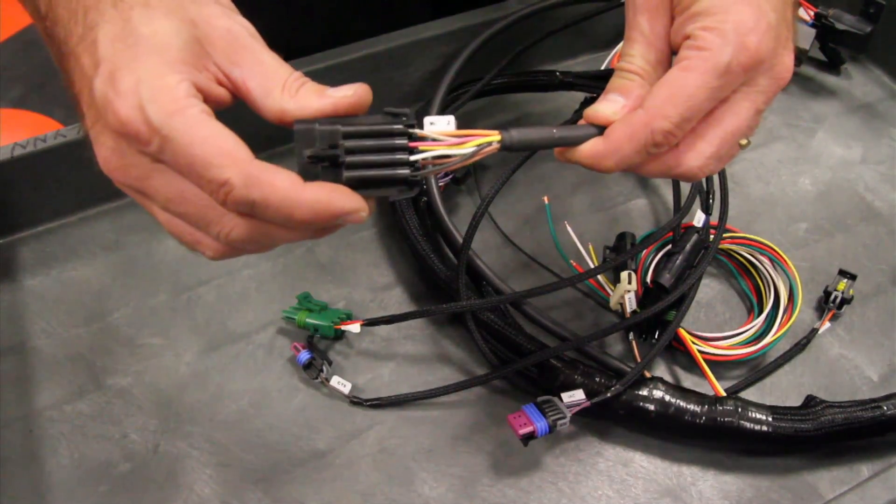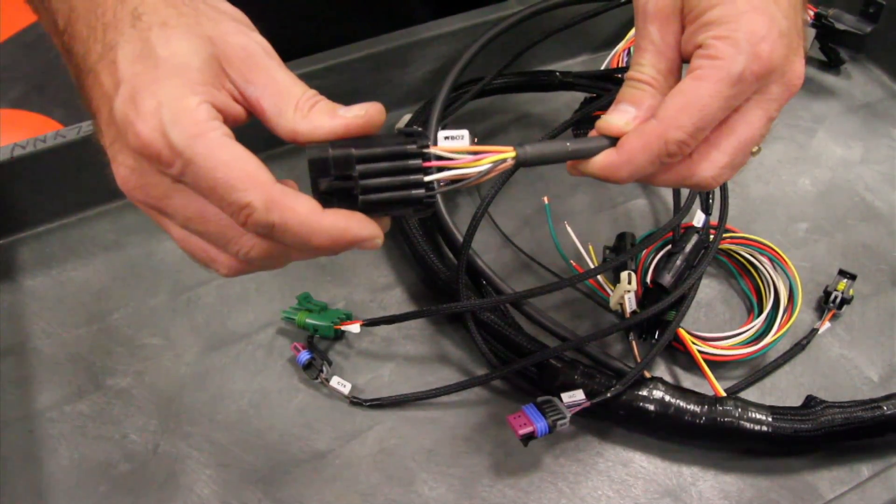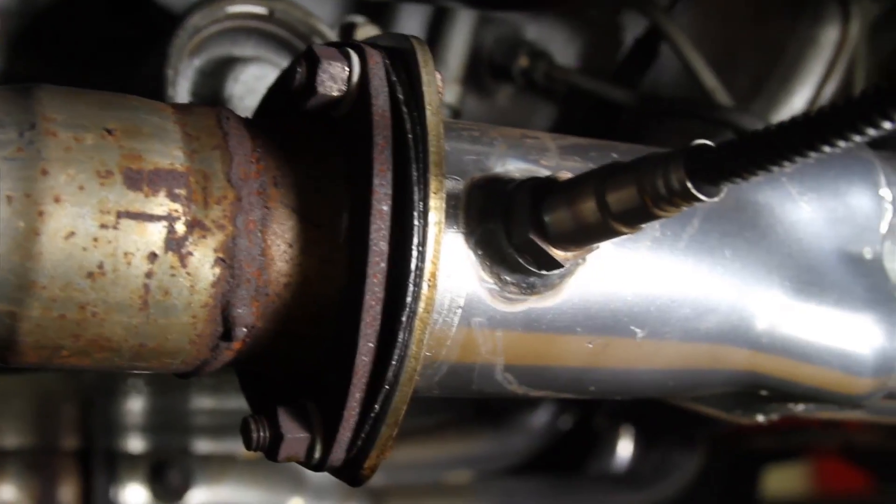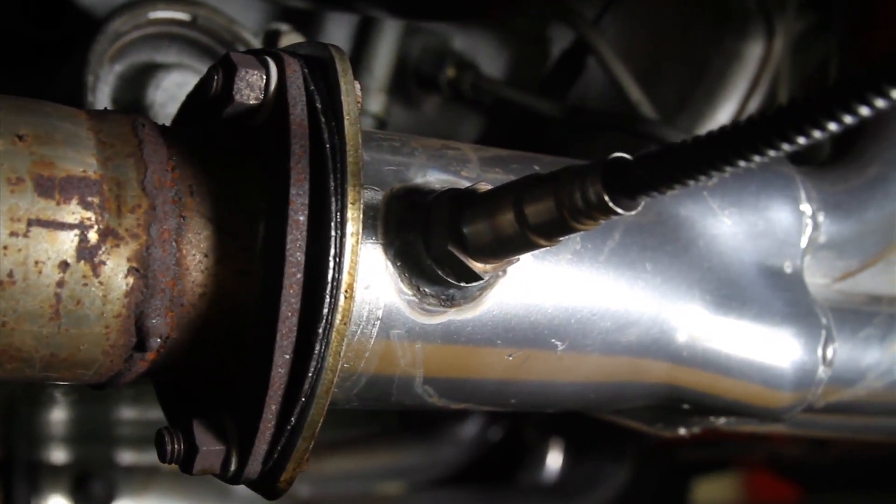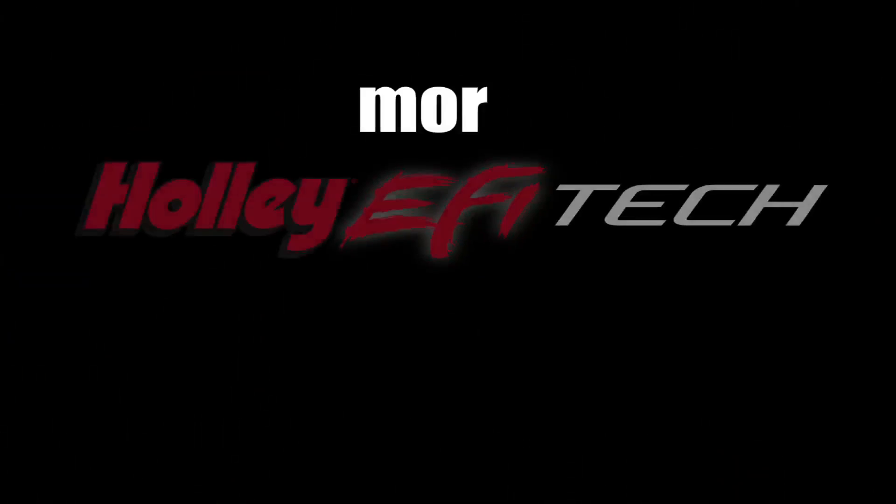And finally, we have what's labeled WB02. That's for the wideband O2 sensor, which is located in the exhaust system. These all plug and play. Once you simply plug them in, you're ready to go.